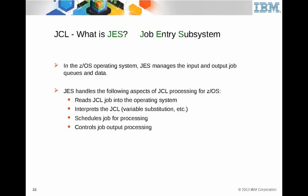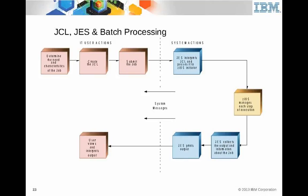A typical action: determine what needs to be done, then create some JCL — though in reality most people take a template and modify it, then submit it. JES interprets the JCL and passes it to a z/OS initiator, which is the point of presence between JES and z/OS. The initiator begins the work, z/OS manages each step — each individual execute statement — JES collects the output, prints it if a printer is available or it can remain in the queue. Then the user views and interprets the output.